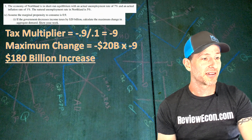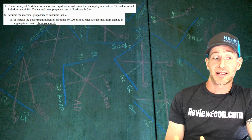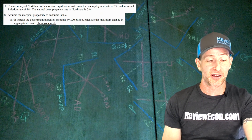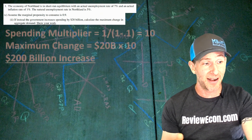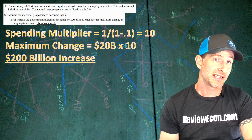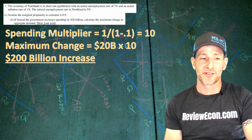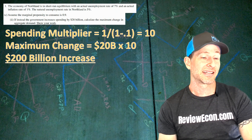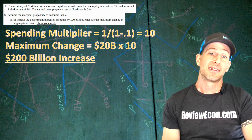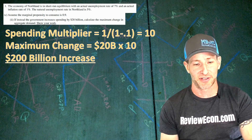If instead the government increases spending by $20 billion, we calculate the maximum change in aggregate demand using the spending multiplier. 1 divided by 1 minus the MPC gives us a multiplier of 10. That gives a maximum change of $20 billion times 10, for a $200 billion increase.